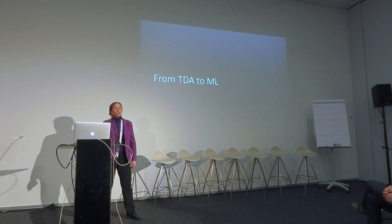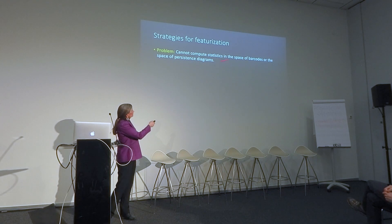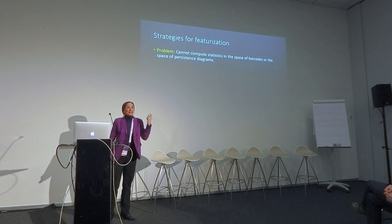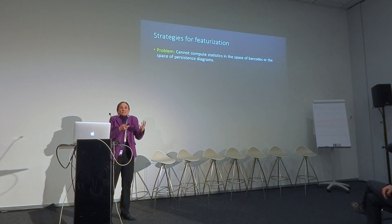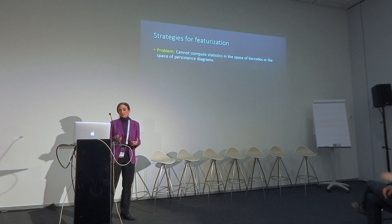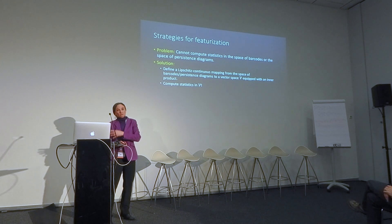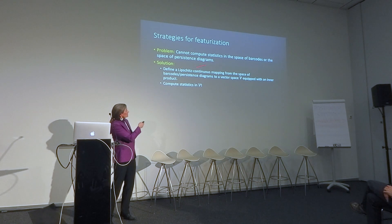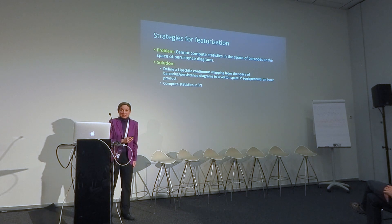TDA and machine learning — how do they interact? It's quite hard. If you look at the set of barcodes or the set of persistence diagrams equipped with the metric, doing statistics in this space is a hard problem. How do you take an average of persistence diagrams or an average of barcodes? What you have to do is featurize this — use some sort of kernel methods in general to translate this problem about barcodes or persistence diagrams into a situation where you can actually do computation. You translate it into some vector space equipped with some sort of inner product, some sort of notion of similarity, and then you can do statistics in this space.